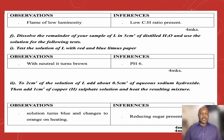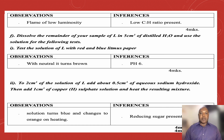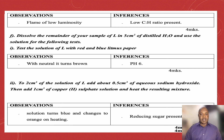Test F: dissolve the remainder of your sample of L in 5 cm³ of distilled water and use the solution for the following tests. Test F1: checking with neutral indicator, it turns brown, showing a pH of around 6. That indicates it is a very weak acid.